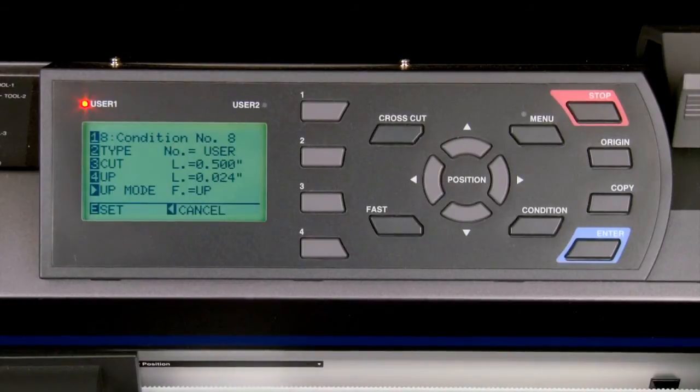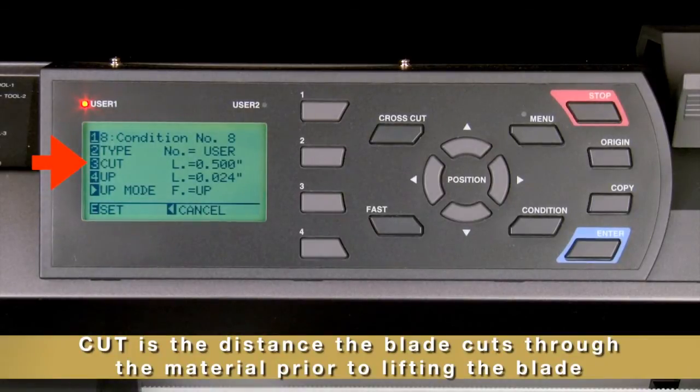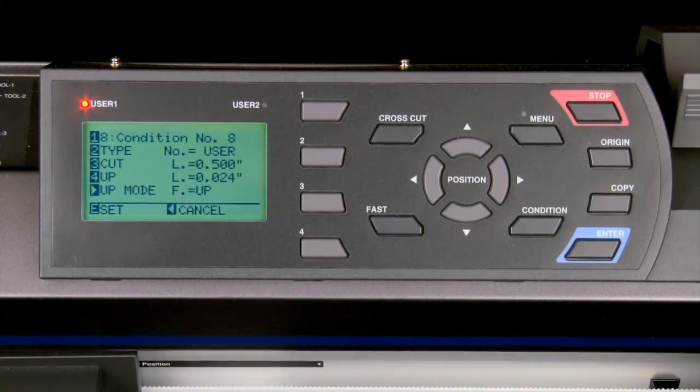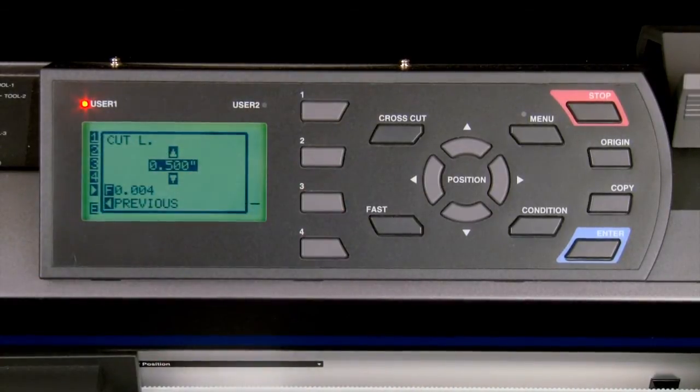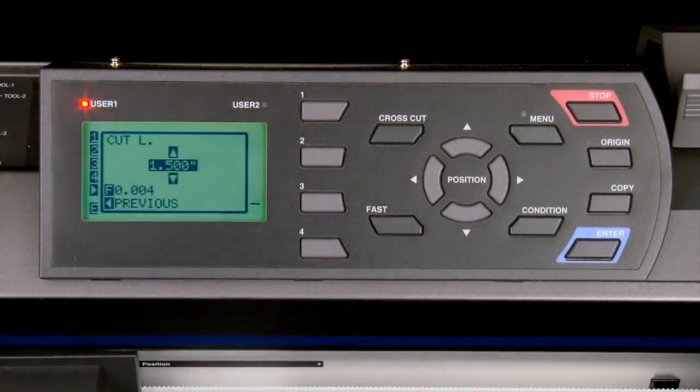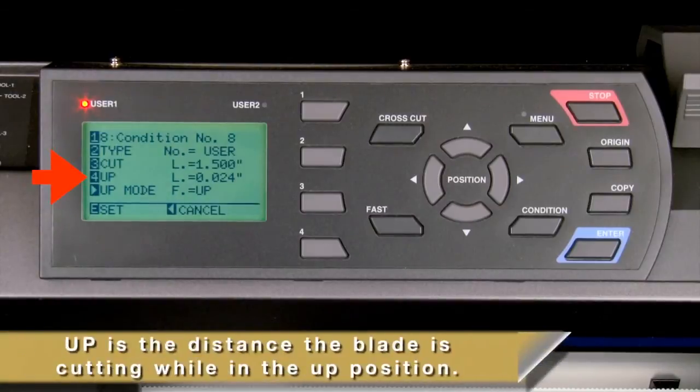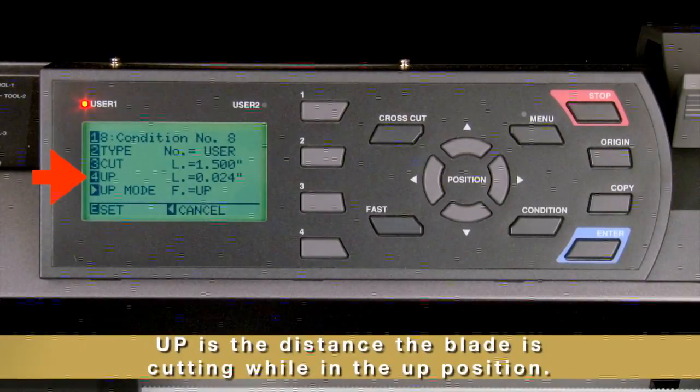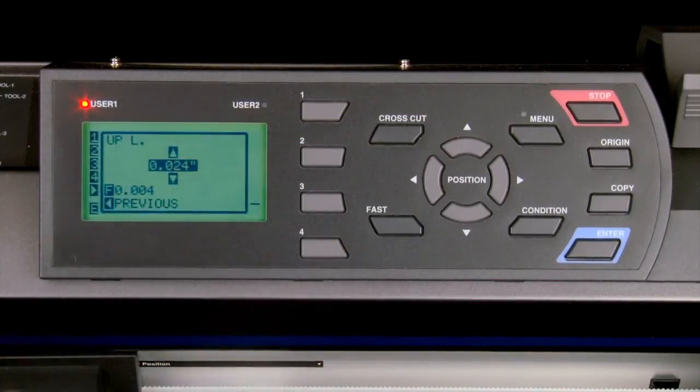In this menu the first value, cut, is the distance the blade cuts through the material prior to lifting the blade. Let's set this to 1, but no higher than 1.5. Up is the distance the blade is cutting in the up position. We'll set this value to 0.035.